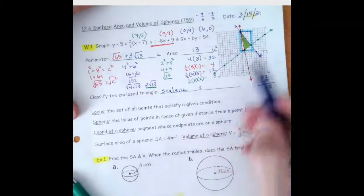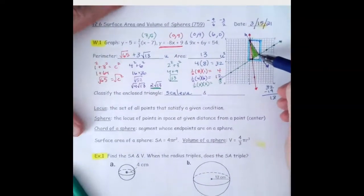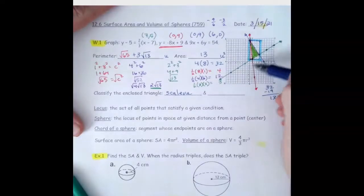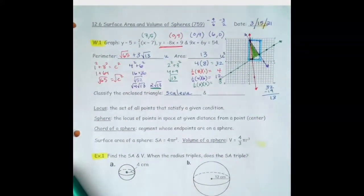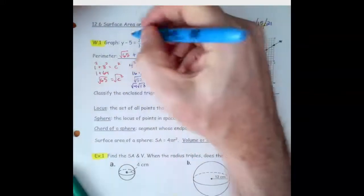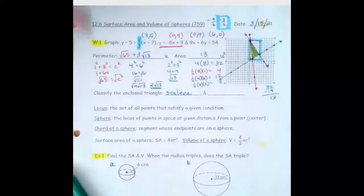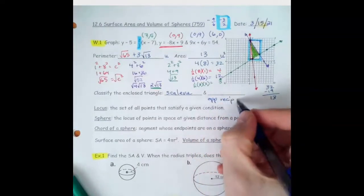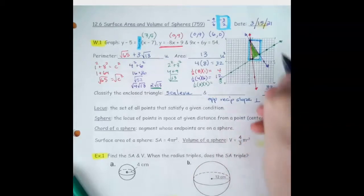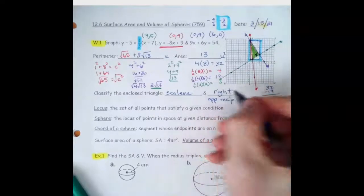Now for the angles, we can look at the slopes. The slope of the green line was 2/3, and the slope of this other line was negative 3/2. Those are opposite reciprocals, which means the lines are perpendicular, which means a right angle, which means that's a right triangle.